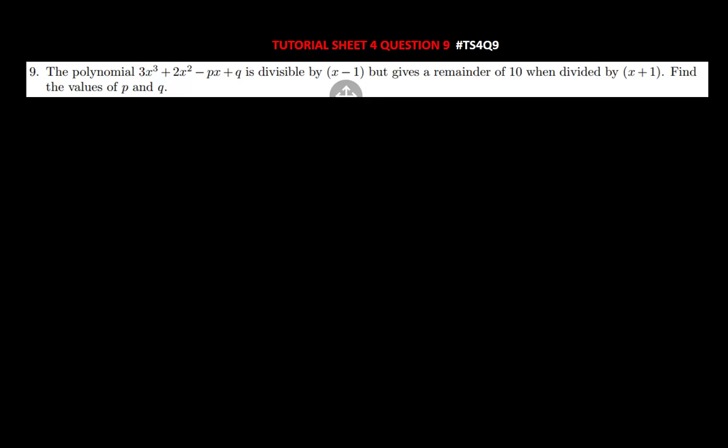You can see here the polynomial is divided by x minus 1 but gives the remainder 10 when divided by x plus 1. The question is saying the polynomial is divisible by x minus 1.